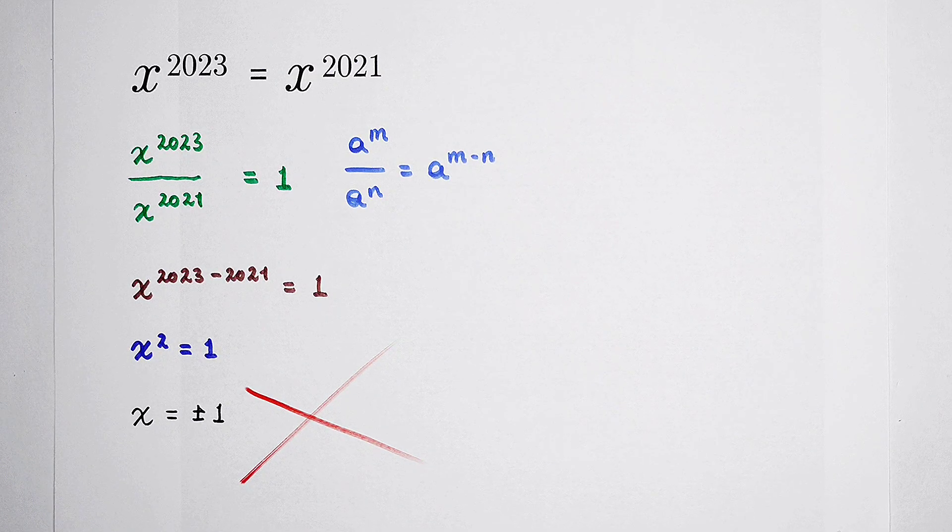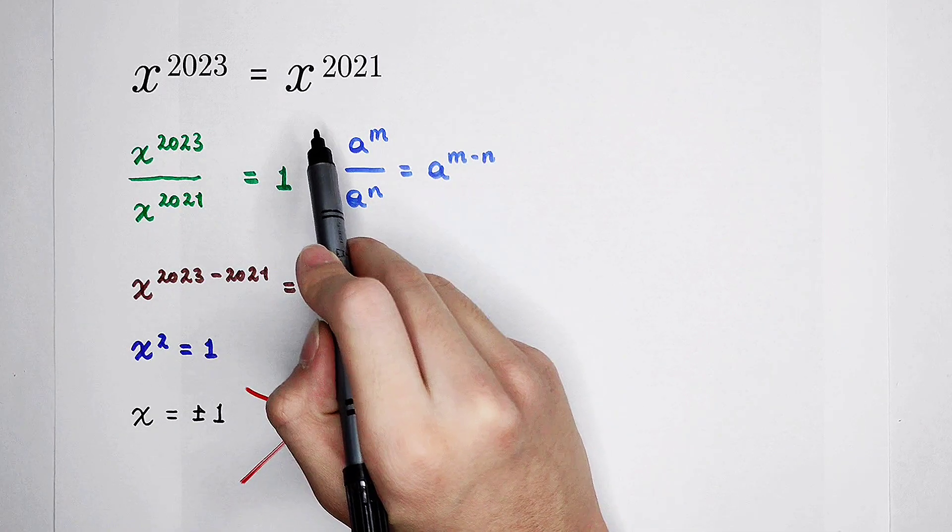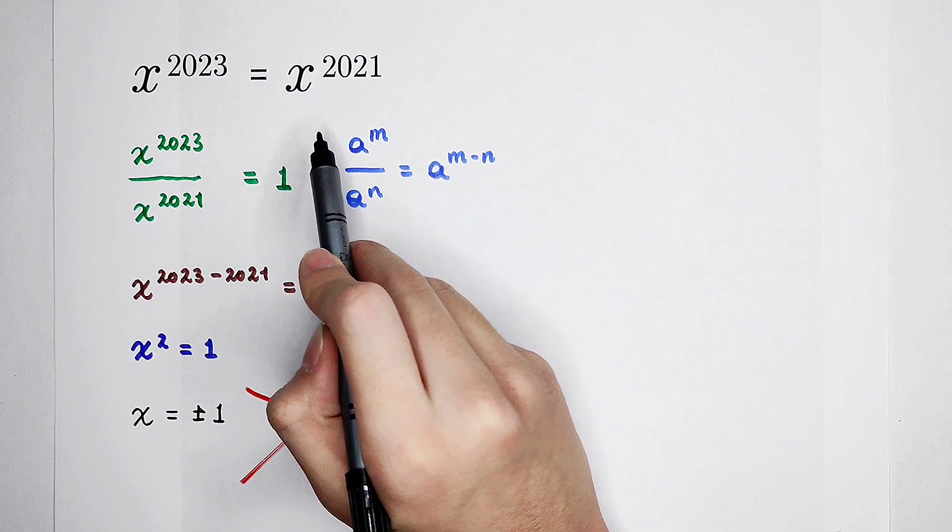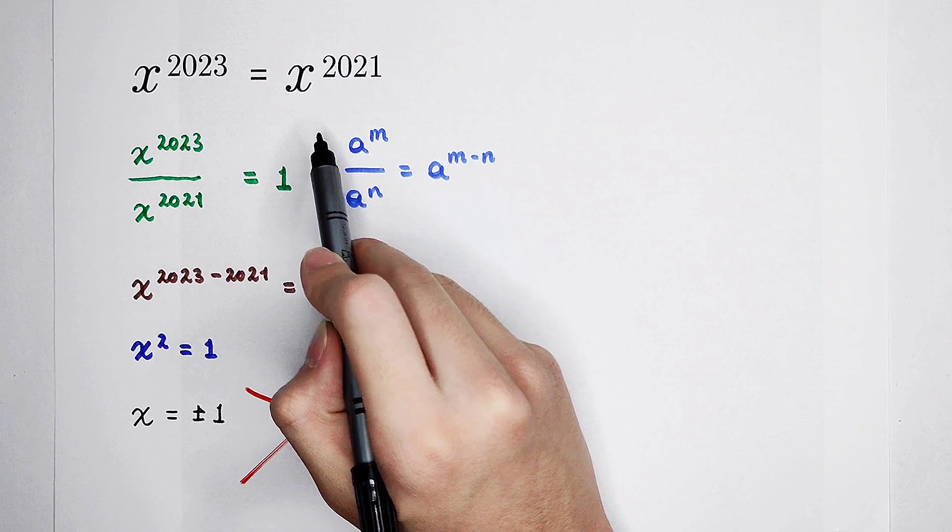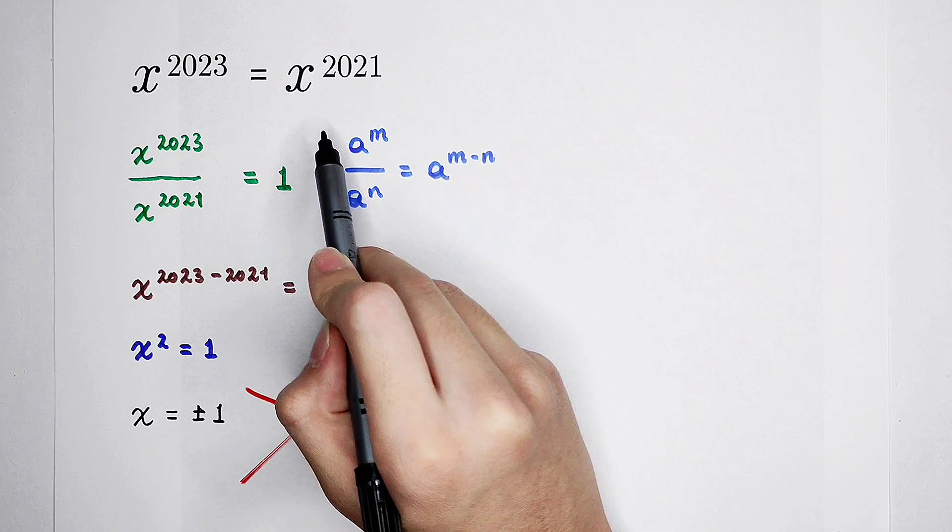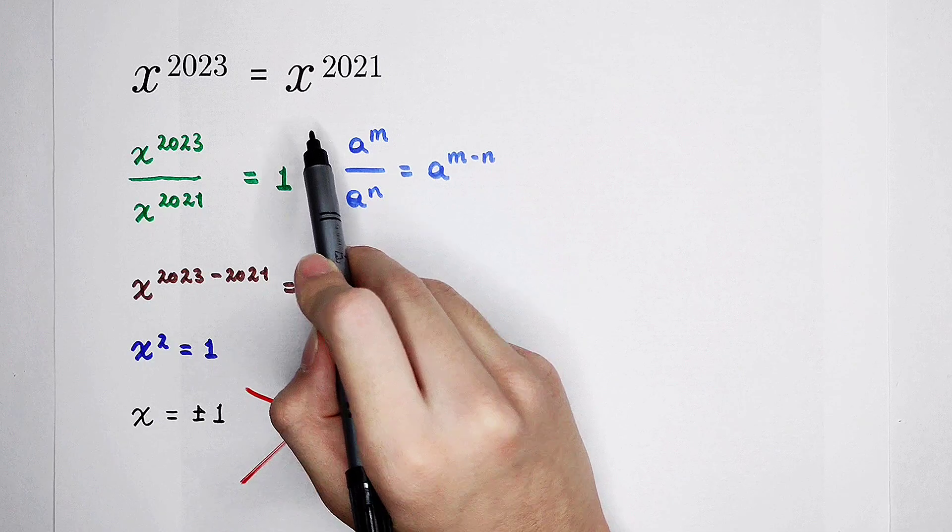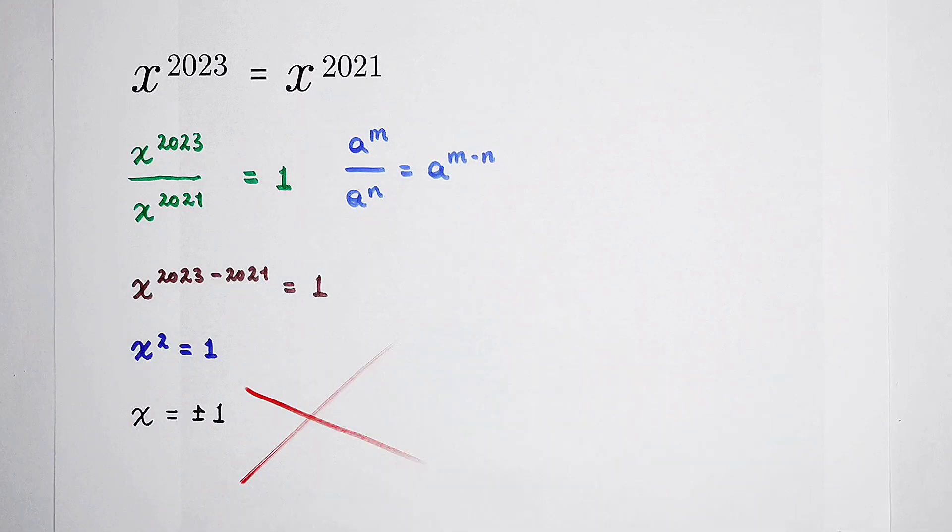If you divide both-hand side by x to the power of 2021, the only possibility is when x to the power of 2021 is not equal to 0. But it can be equal to 0 when x is equal to 0, and this equation can hold.